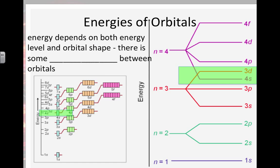These orbitals are going to overlap somewhat. The energy depends on both the energy level and the orbital shape, so there's some overlap where one shape gets a little bit too high.